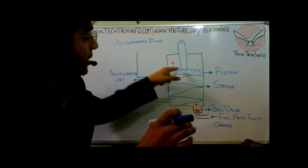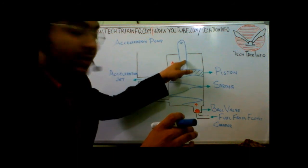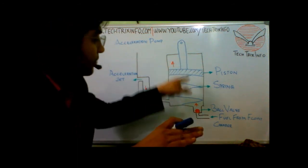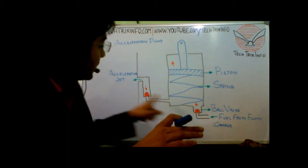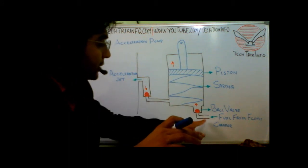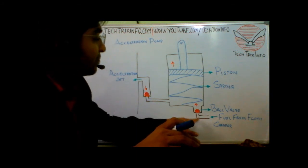We have a piston over here and this connecting rod towards this piston is linked with the acceleration pedal. Here we have a spring and two valves. One is connected towards the acceleration jet and the other towards the fuel from the float chamber.